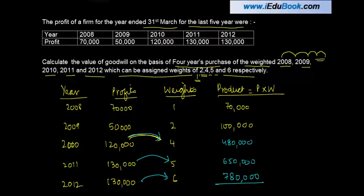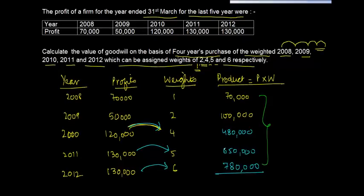Now since you've got the product, you can just add up all these weighted profits. So this will give you seventy plus one hundred, one seventy plus four eighty, six fifty plus six fifty, thirteen hundred, two thousand eighty. So what's the total of the weight? One, three, four, seven, five, twelve and six, eighteen.